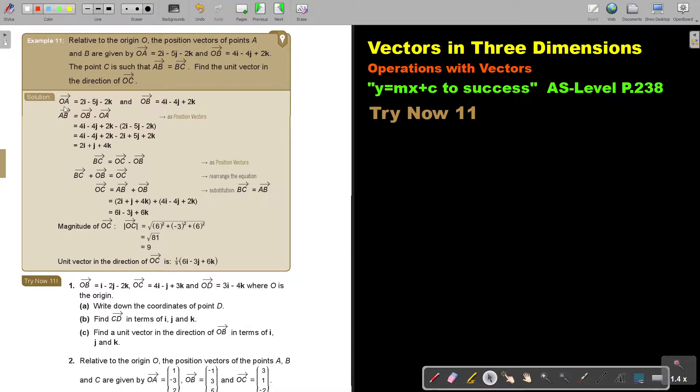Let's start. There's OA and OB. So what will AB be? In terms of position vectors, it's the second one, OB, minus the first one, OA. Substitute it and get AB.